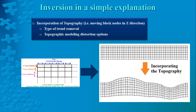To incorporate topography into a model we have to shift the nodes of the cells in the vertical direction, and we do not use absolute elevation values but rather trend-removed values. To achieve a better and more realistic inversion, the movement of nodes in the vertical direction is not the same for all locations. For example, in valleys we have less depth of investigation, while at summits or ridges we have higher depths of investigation. Some distortion options are available in the software to handle this.